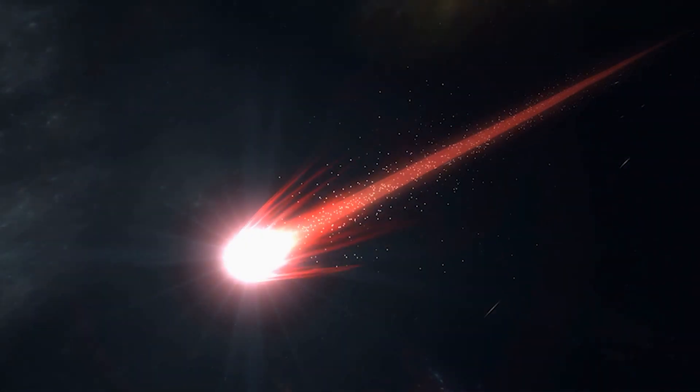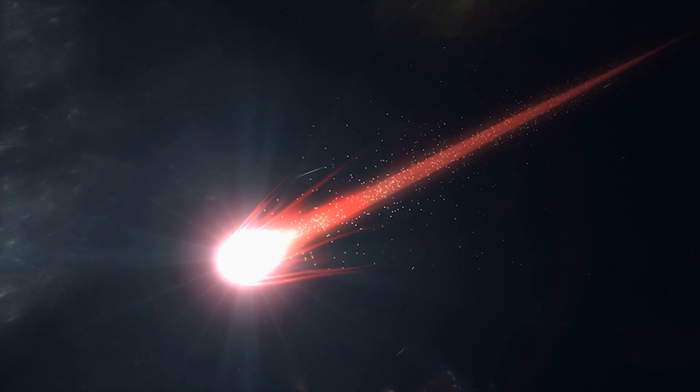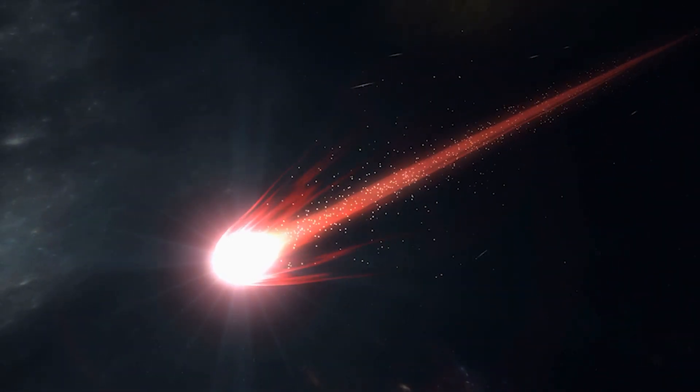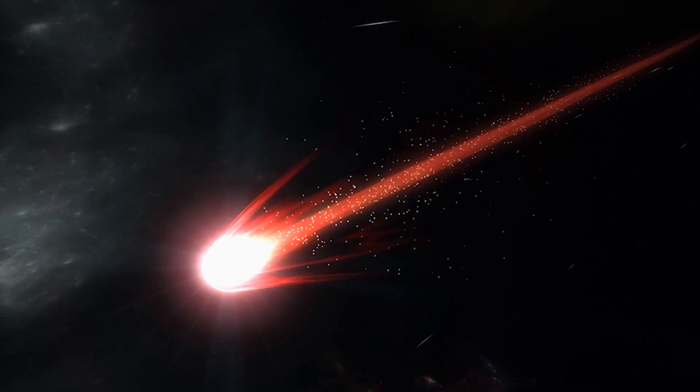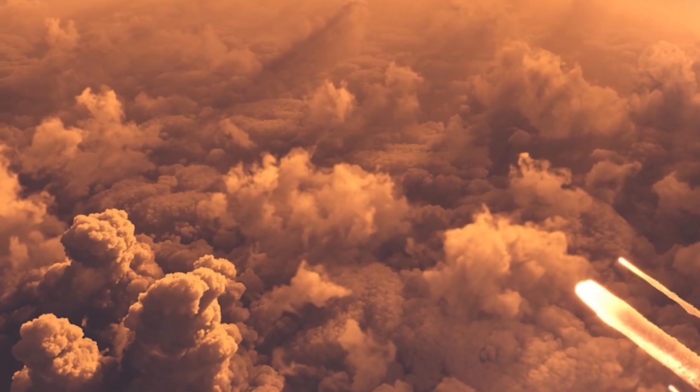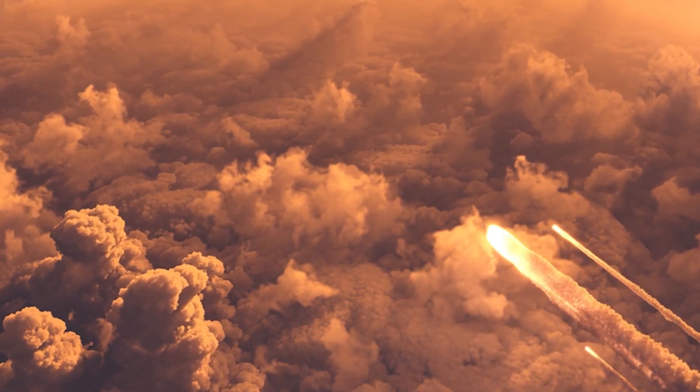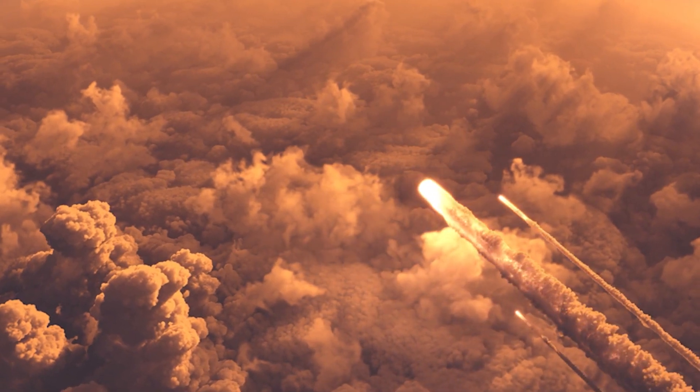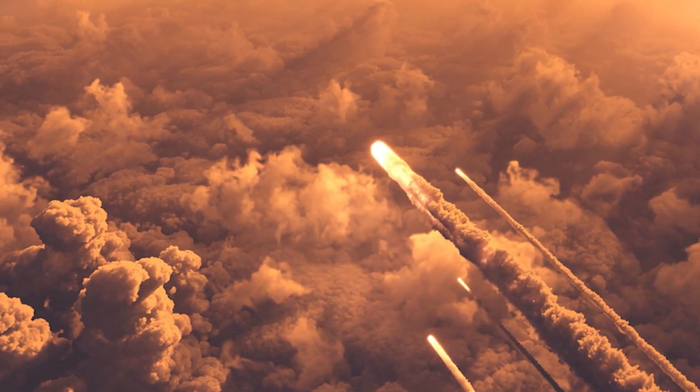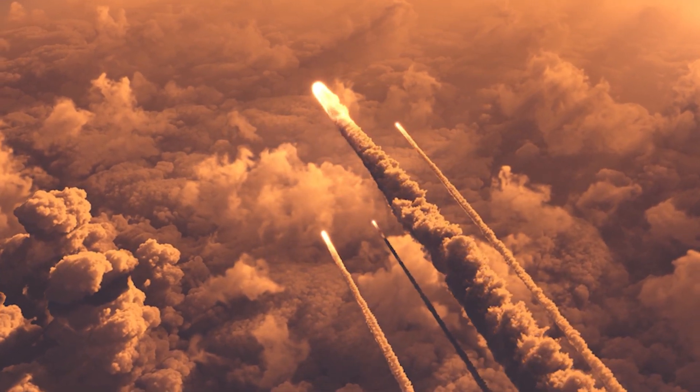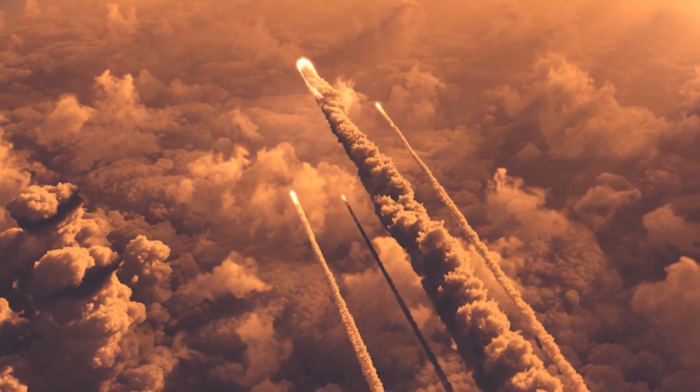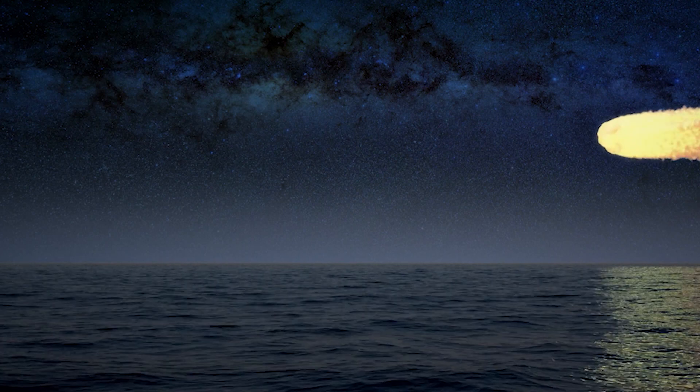Conditions similar to those of the Miller-Urey experiment are present in other regions of our own solar system. The Murchison meteorite that fell near Australia in 1969 was found to contain several different amino acid types. Comets are thought to contain large amounts of complex carbon compounds, such as formamide, ethylene glycol, and ethanol. That's right, drinking alcohol frozen in a comet.